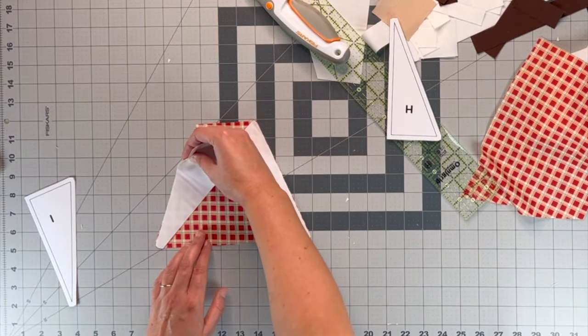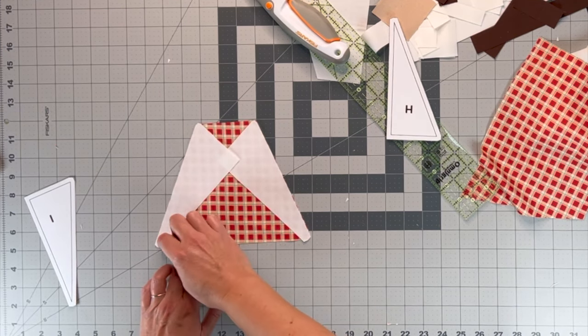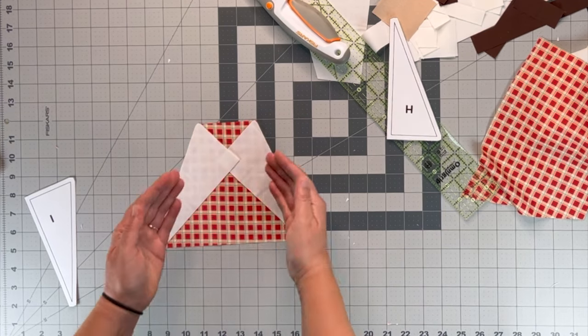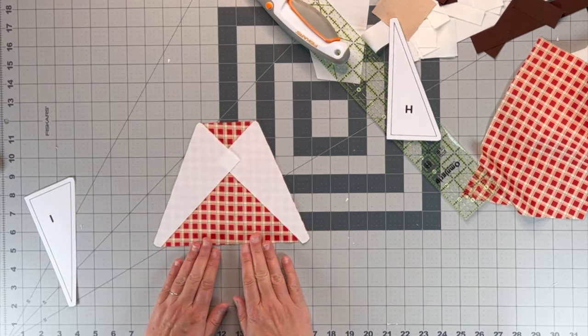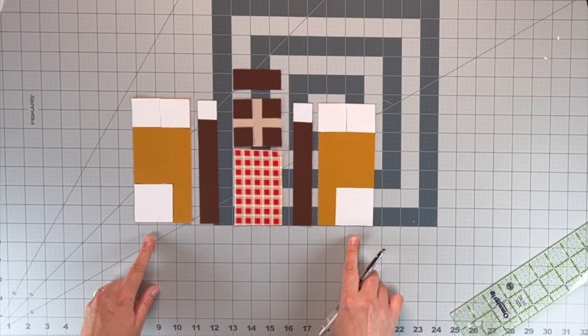And then we're going to do the same thing over here. We're going to line up the edges and sew with a quarter inch seam. And then once we lay that out, we'll have the bottom of our block done.